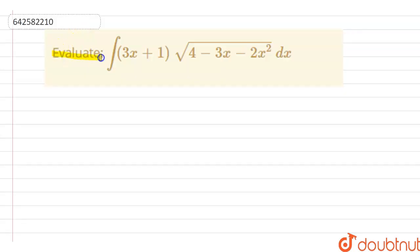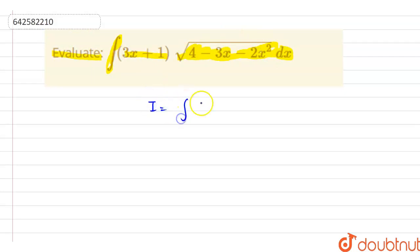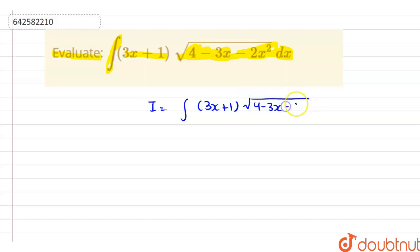The question is: evaluate the integration of (3x + 1) into under root of (4 minus 3x minus 2x square) dx. So here we have I is equal to the integration of (3x + 1) into under root of (4 minus 3x minus 2x square) dx.